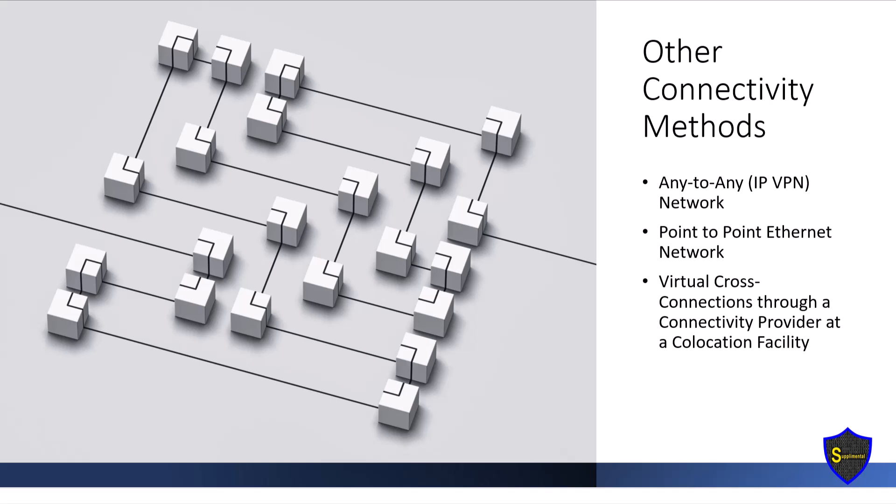A point-to-point ethernet network directly connects two endpoints, usually over ethernet technology. This type of connection provides a dedicated link between two locations offering high bandwidth and low latency. Point-to-point ethernet networks connect separate data centers, offices, or cloud environments, establishing a direct connection between two specific endpoints creating a dedicated link that only involves communications between those two endpoints.